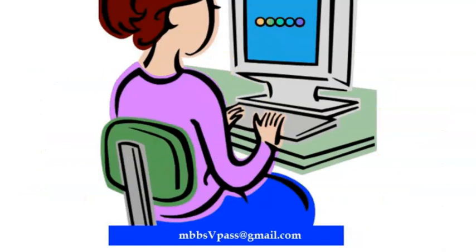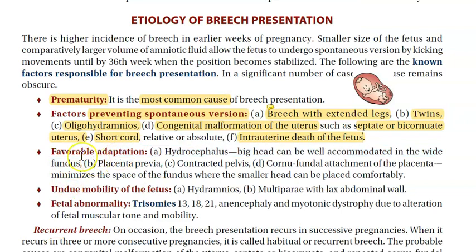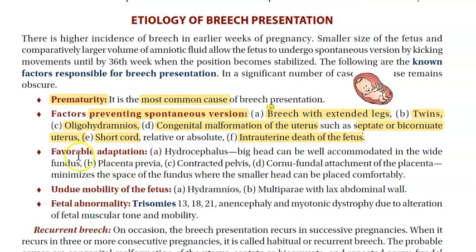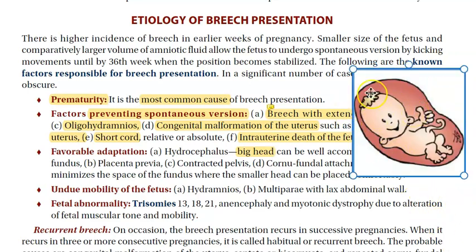So those are the factors which will not allow the baby to undergo version. The next etiology of breech presentation is favorable adaptation. Hydrocephalus — a big head — so the baby is trying to adapt within the uterus. It will adapt by presenting breech. It has a big head, so this baby's head is enlarged due to hydrocephalus.